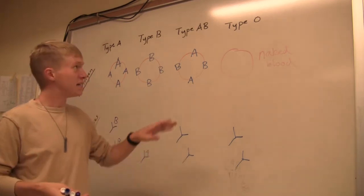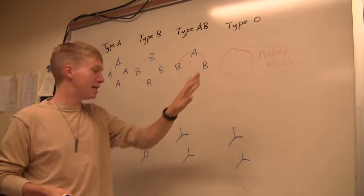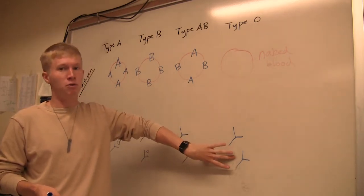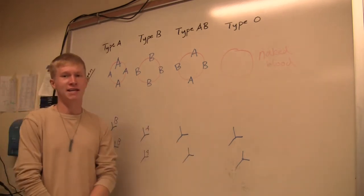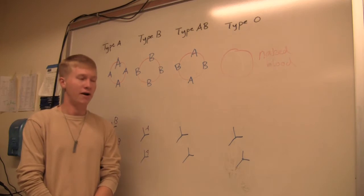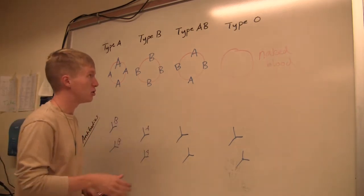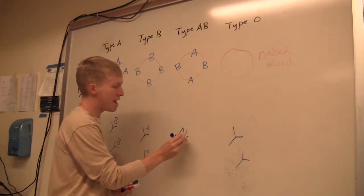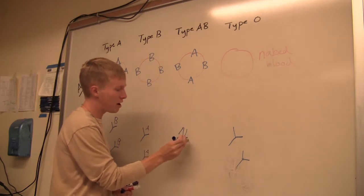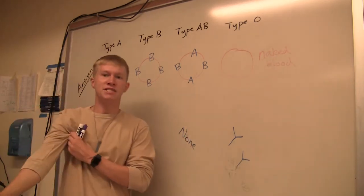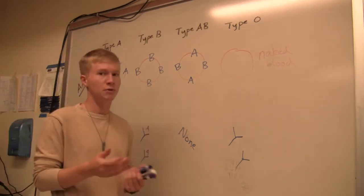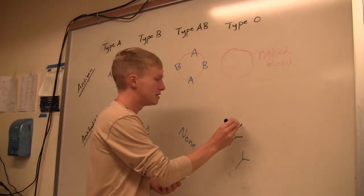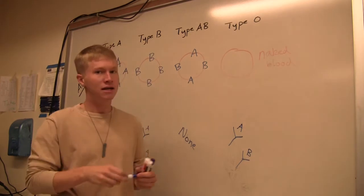Take a second here and think about type AB and type O blood and what kinds of antibodies you would expect to find in each of those blood plasma. Hopefully you were able to come to the conclusion that type AB blood is going to have no antibodies. We wouldn't want type A or type B antibodies in our blood. And then type O blood is going to have both types of antibodies, type A and type B antibodies.